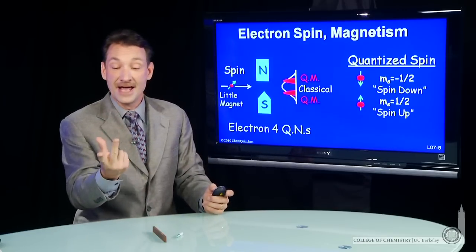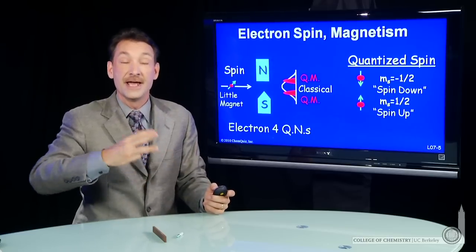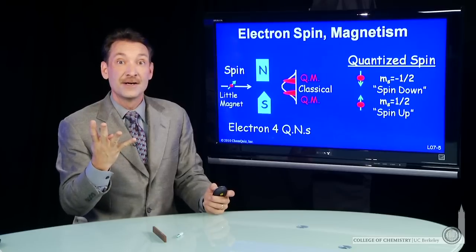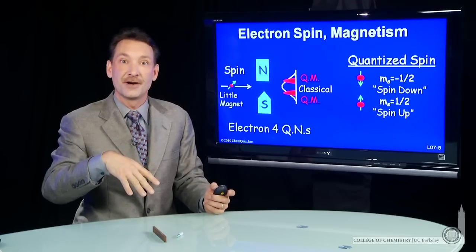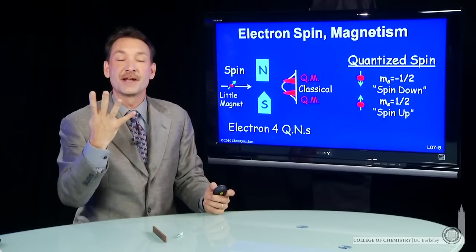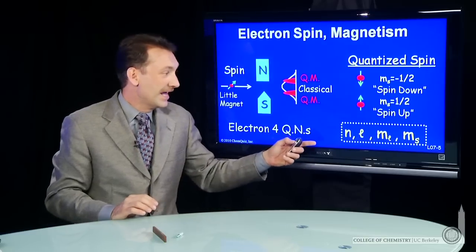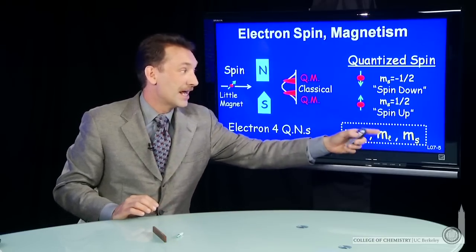So we have n, l, m sub l that defined the orbital. And now we have m sub s, which defines the spin of the electron. So four possible quantum numbers now can describe an electron about an atom. n, l, m sub l, and m sub s.